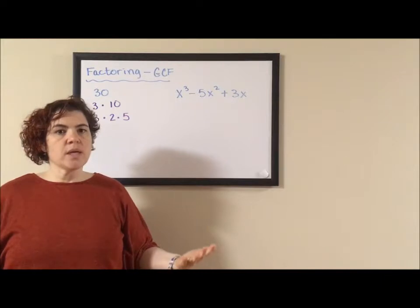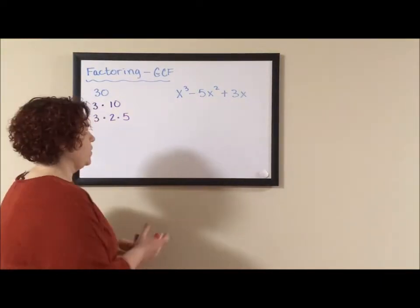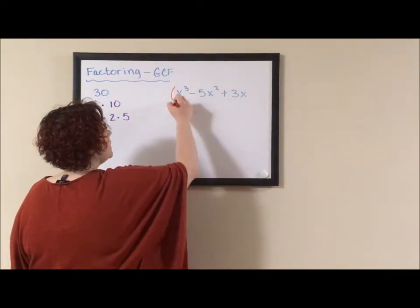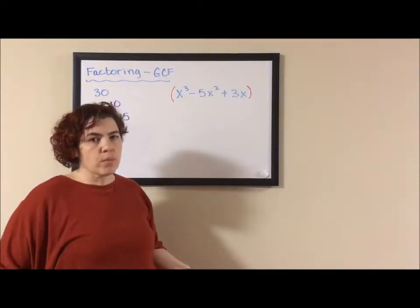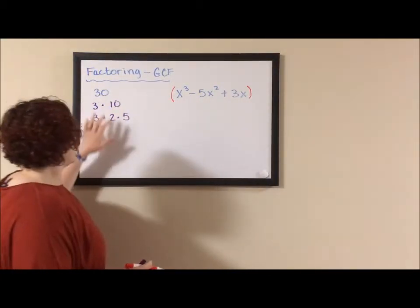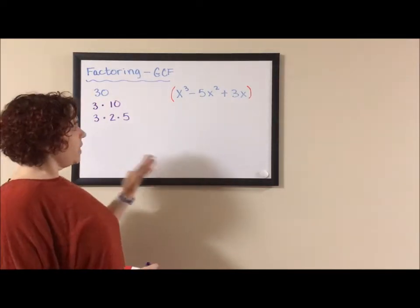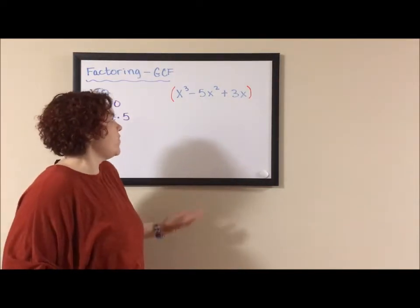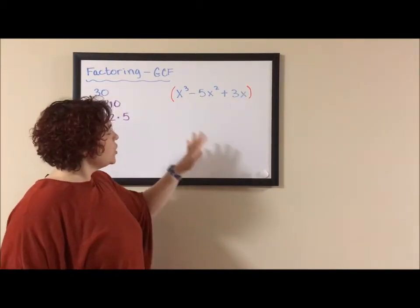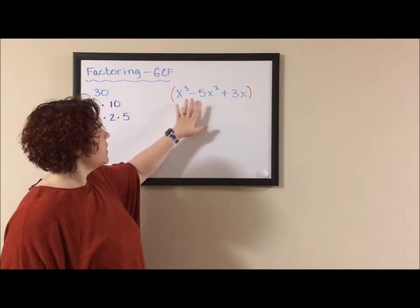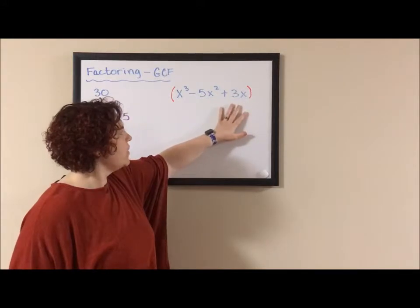Because I want to think of a polynomial as being a single number, we use parentheses and we say, hey, this whole trinomial is really a single number. And just like we took a 3 out of 30, we say, hey, what can come out of x cubed minus 5x squared plus 3x? And we look at the three terms and it has to be something that comes out of everything.